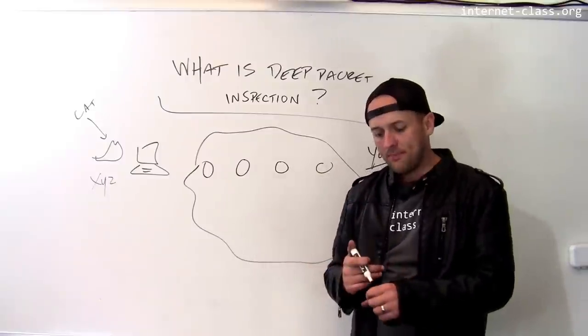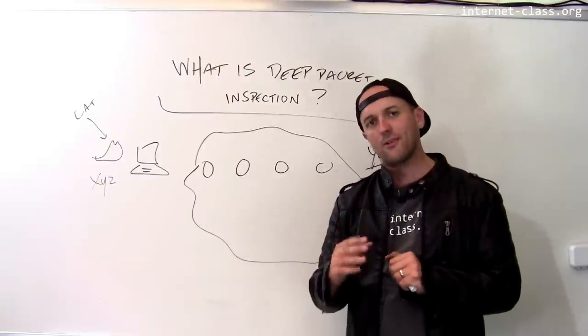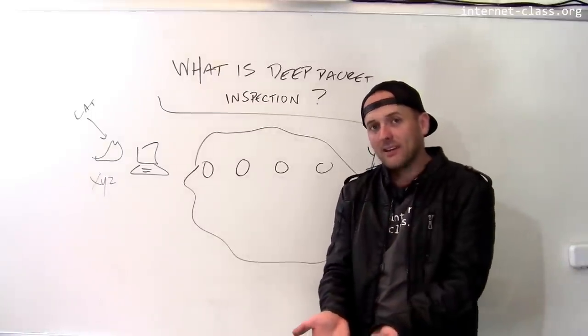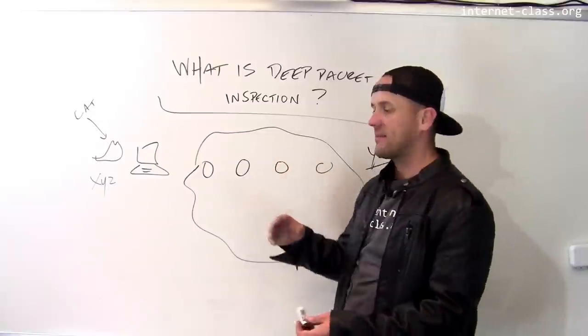And so to some degree, this is a violation of the design of the Internet. The core Internet routers are not supposed to look at other parts of the packet, but they have access to the packet contents. And so they can look at other parts of the packet if they want to. And sometimes they do.